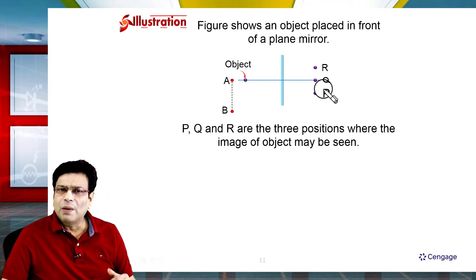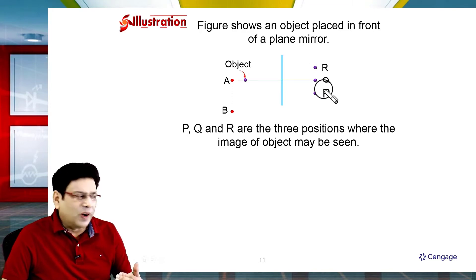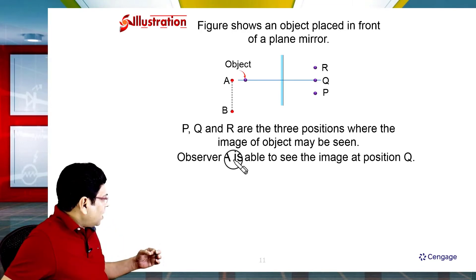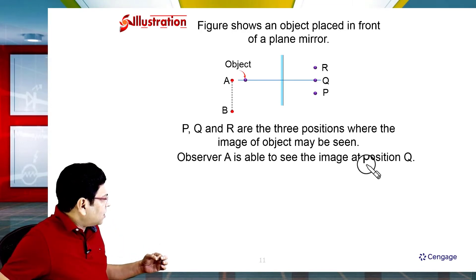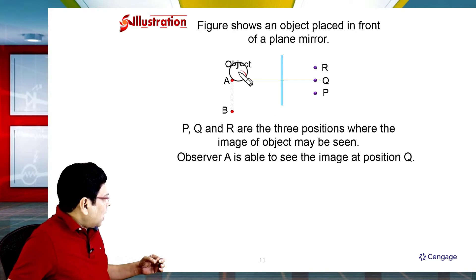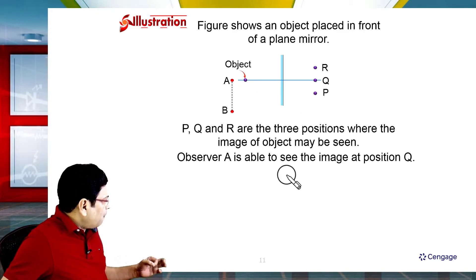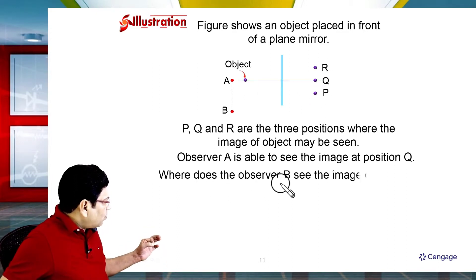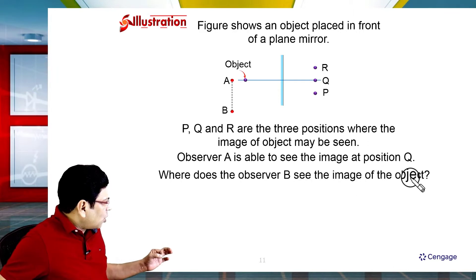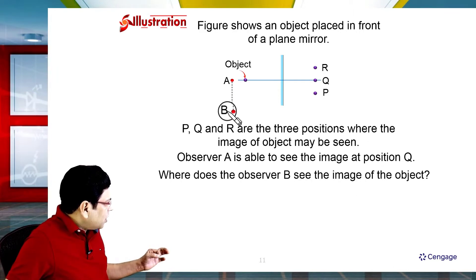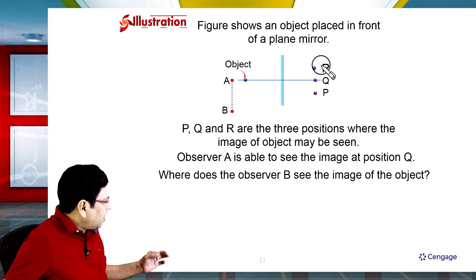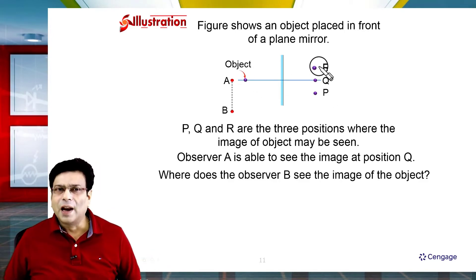Observer A is able to see the image at position Q. If observer A is in position, this object can be seen at Q. Where does observer B see the image of the object? The options are P, Q, or R.